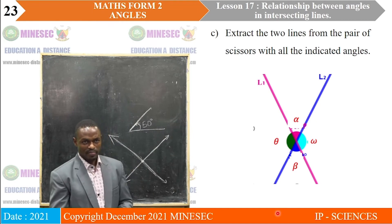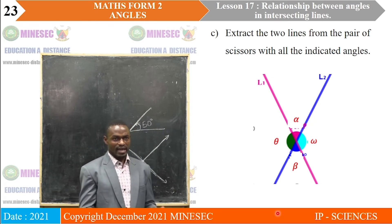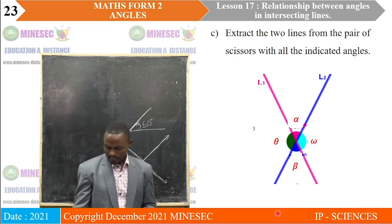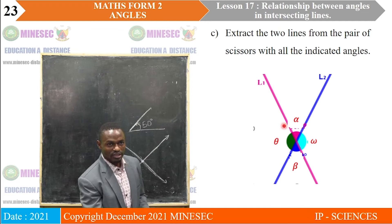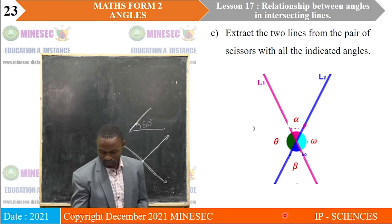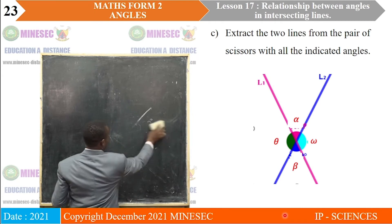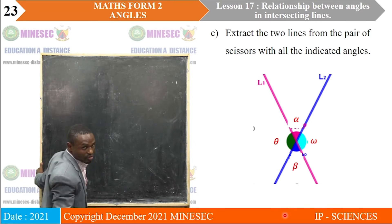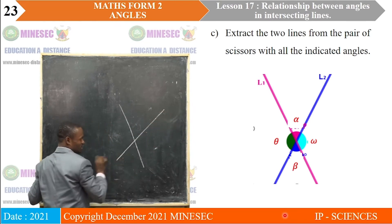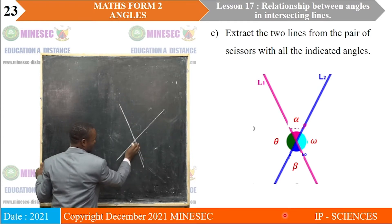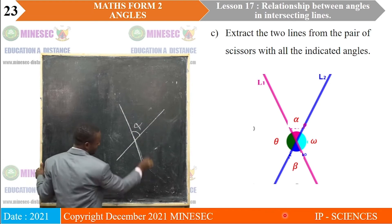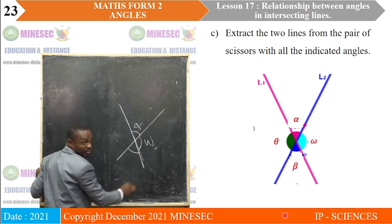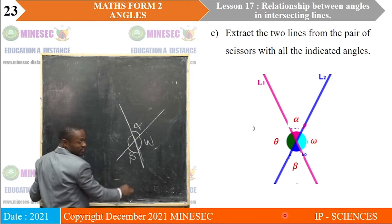C: Extract the two lines from the pair of scissors with all the indicated angles. When you look at C, you notice that the scissors have been taken away and only the angles formed on the scissors are visible. If we make an illustration of what is happening, the angles on the scissors were: here we have alpha, here we have omega, here we have beta, and this is theta.